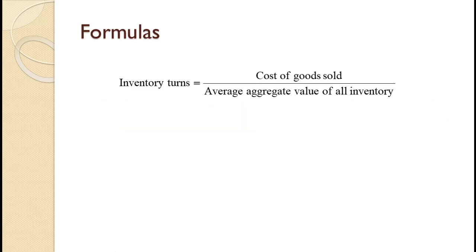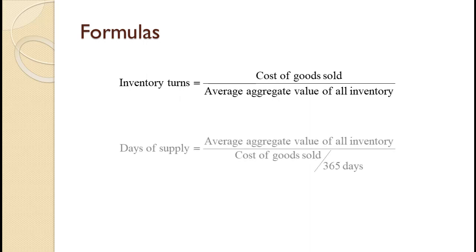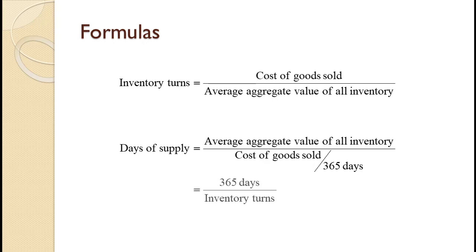Inventory turns is calculated as the cost of goods sold divided by the average aggregate inventory value for all the inventory used for production. Days of supply is calculated as the average aggregate value of all inventory used for production, divided by the quantity of cost of goods sold divided by 365 days. Days of supply can also be calculated as 365 days divided by inventory turns. Using this method allows you to directly see their relationship.